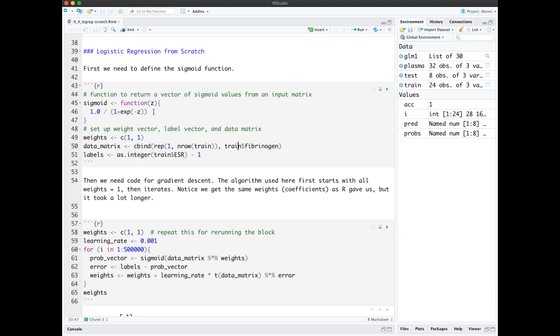First we set up this sigmoid function here, 1 over 1 plus exp to the negative c. We'll let random weights start at 1 and 1, then we'll make a matrix out of our data for ease of multiplication. And instead of our labels being 1 and 2, I'd rather they're 0 and 1.